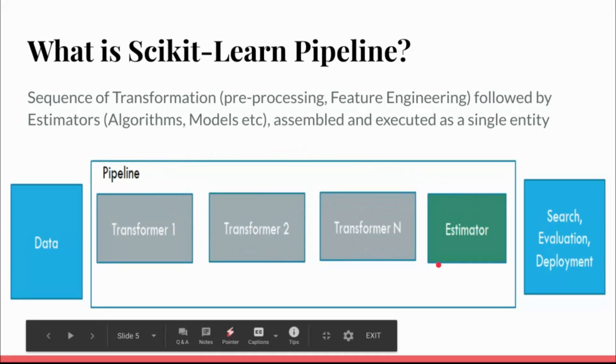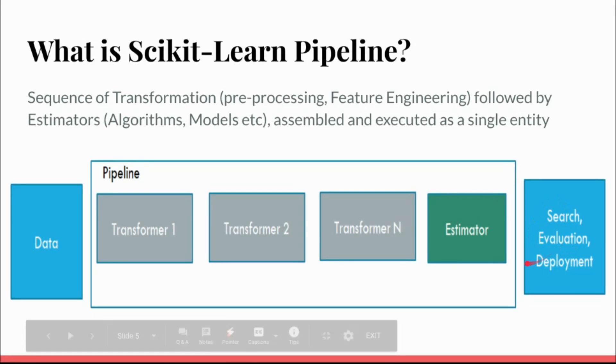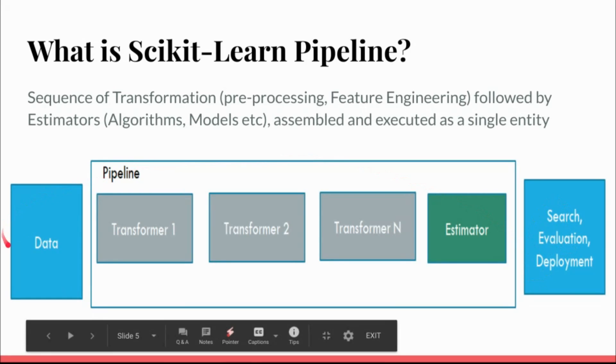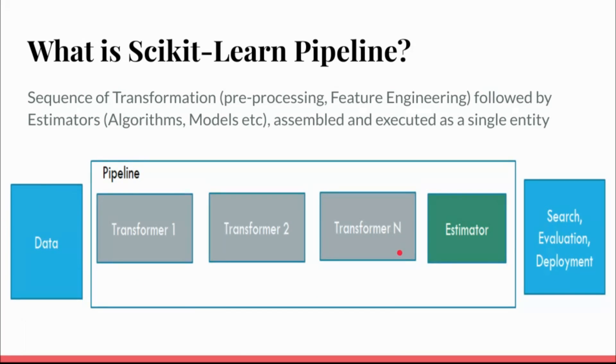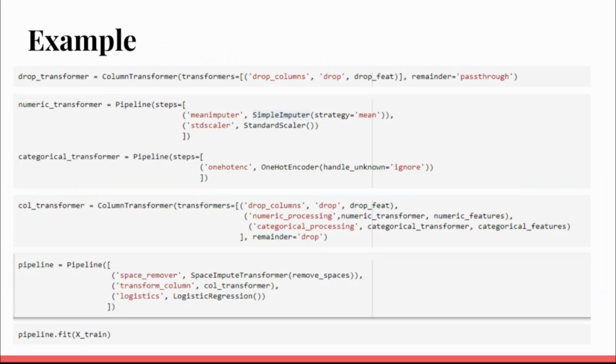You can run your grid search or random search, do evaluation, and deploy the entire pipeline together. Basically, the scikit-learn pipeline gets together all the different components that I talked about in the previous slide into a single pipeline object. We can directly go and pickle or save the pipeline object and then deploy it directly. Every entity that we are using in the pipeline - the transformers and estimators - are part of a single big object in this case.